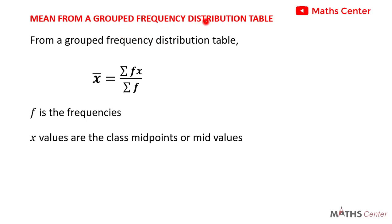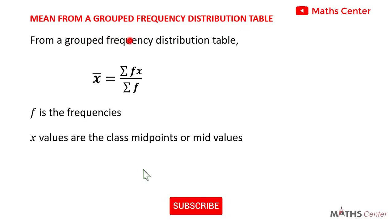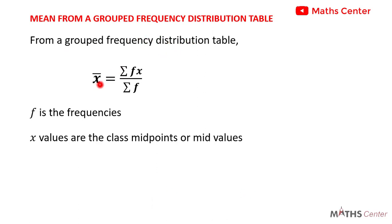Mean from a grouped frequency distribution table. From a grouped frequency distribution table, the mean is equal to sigma fx divided by sigma f. The f values are the frequencies and the x values are the class midpoints or class midpoint values.